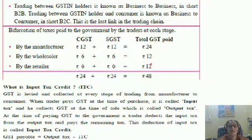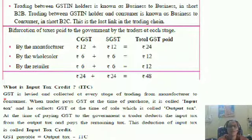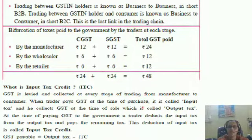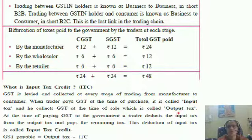We can see how the product goes from manufacturer to wholesaler and wholesaler to retailer. Now we will see what is input tax credit, that is ITC. GST is levied and collected at every stage of trading from manufacturer to consumer. When a trader pays GST at the time of purchase it is called input tax, and collects GST at the time of sale, which is called output tax.